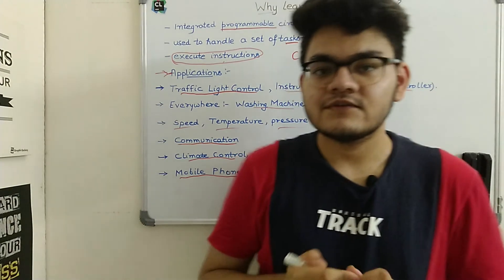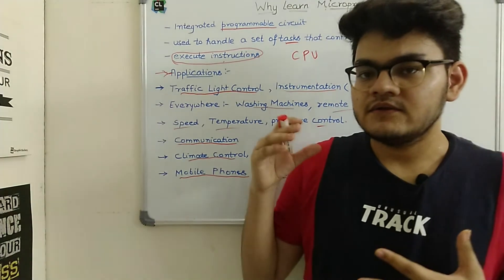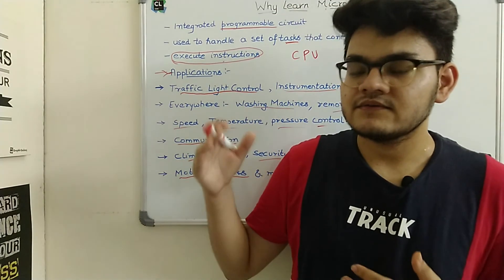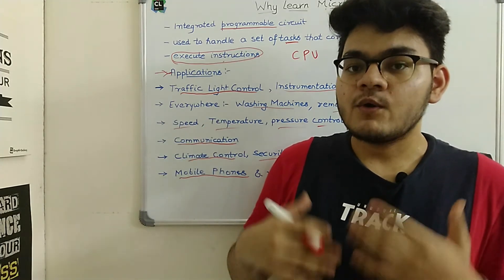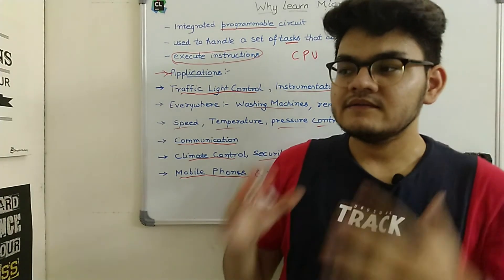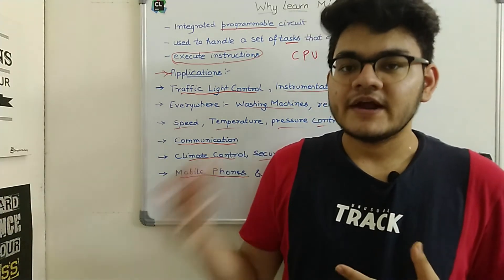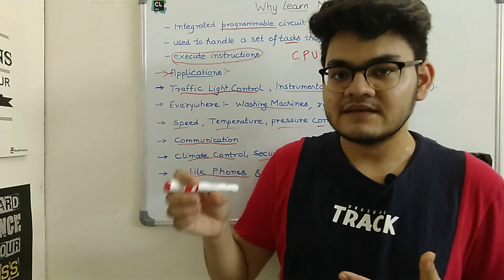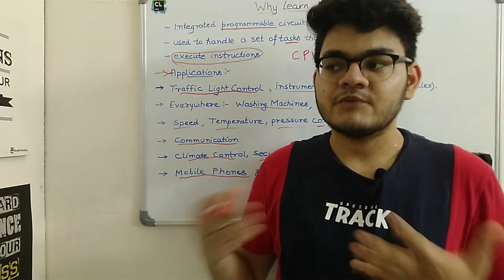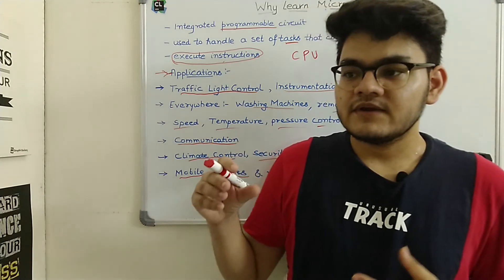If you're a computer science student or programmer and you know the basic architecture of a microprocessor, you'll be able to understand how instructions and applications are running, and you can optimize your applications accordingly. It's like knowing programming languages such as Java, C++, or Python — if you also know the low-level architecture, you can optimize your code and resolve problems.